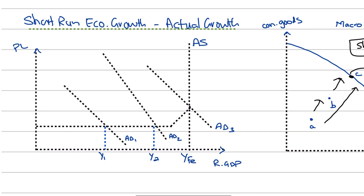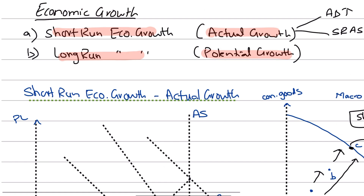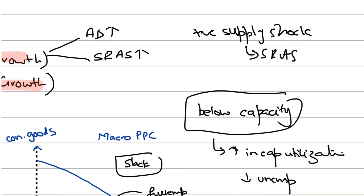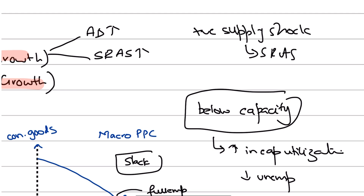Actual growth can also occur because of a rise in short-run aggregate supply. If short-run aggregate supply rises and shifts to the right, it could be due to a positive supply shock — when aggregate supply shifts outwards because costs in the economy go down. Maybe there's a fall in raw material costs, wages are falling, or taxes are going down. This positive supply shock results in profitability of firms going up, and hence they produce more output. This increase in real GDP is also actual growth.